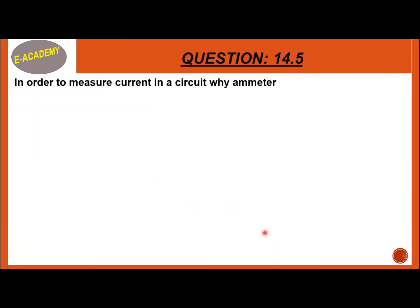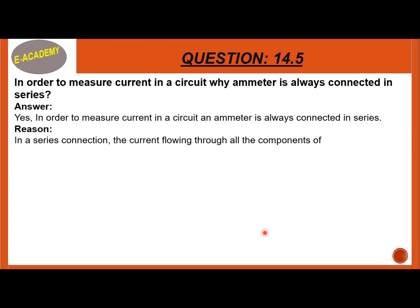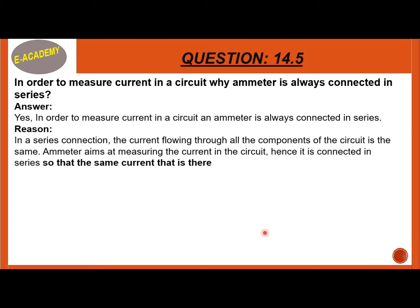Question 14.5: In order to measure current in a circuit, why is the ammeter always connected in series? In a series connection, the current flowing through all the components of the circuit is the same. Ammeter aims at measuring the current in the circuit, hence it is connected in series so that the same current that is in the circuit flows through it and gets measured.